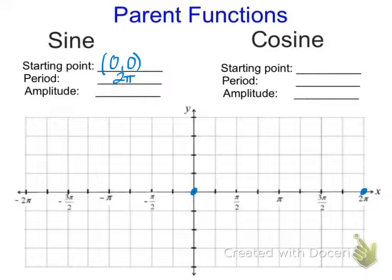Since sine repeats, the points at 0 and 2π will be at the same level, so we can copy and paste the graph created between 0 and 2π to duplicate and extend it. The amplitude — the peak and valley of the wave — is 1, because on the unit circle the maximum is 1 and minimum is negative 1. So the parent function goes from 1 to negative 1, giving an amplitude of 1.